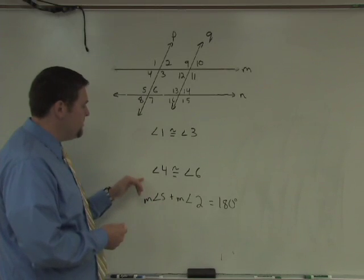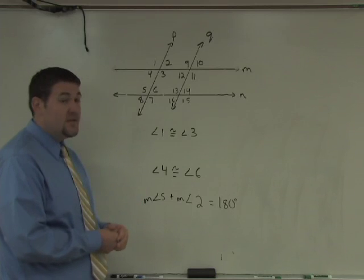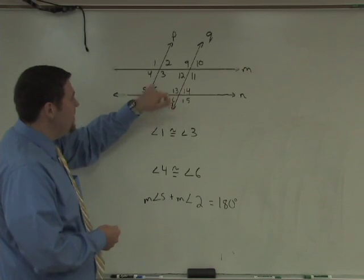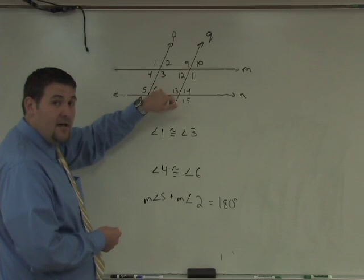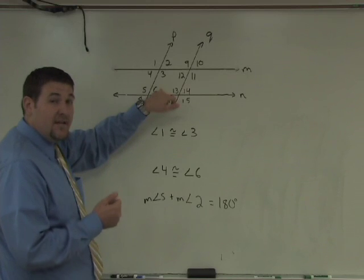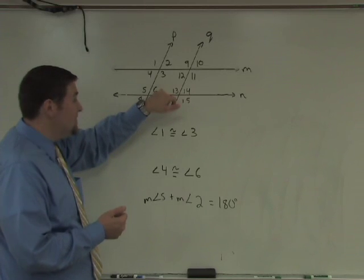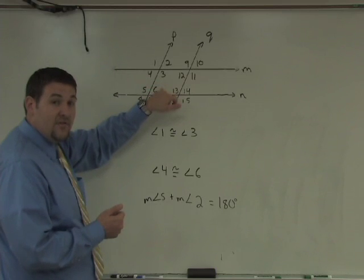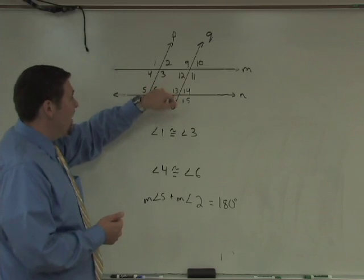Let's look at the second set. Angle four is congruent to angle six. Here's angle four. Here's angle six. These two are alternate interior angles that are congruent. And today in class, you proved the converse of the alternate angles theorem stating that if four and six being alternate interior angles are congruent, then the lines are parallel.